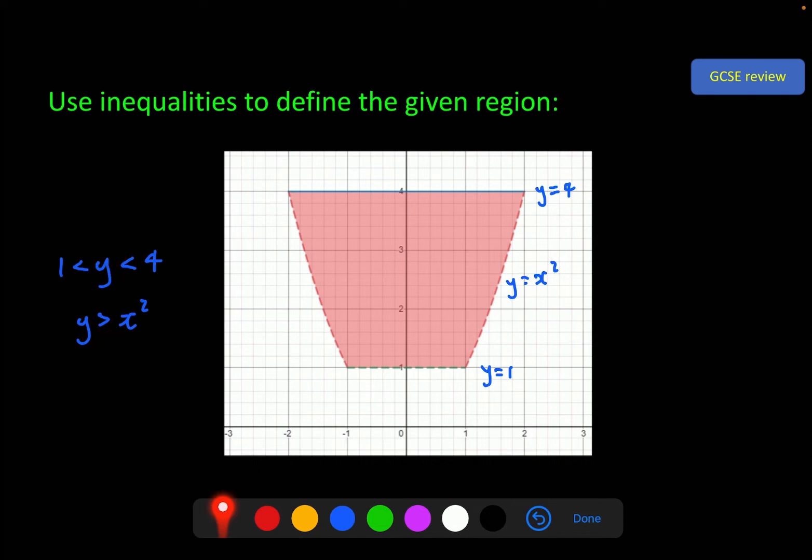But there is one final thing to consider, and that is what the lines are. Here we've got a dashed line or a broken line, and here as well. These represent strict inequalities as I've written them here. However, the solid line at the top, if you remember, represents the fact that it can equal that as well. So that needs to be less than or equal to 4. So these are our finished inequalities representing this region here.